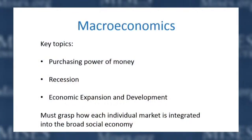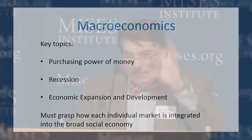I argue that these three issues can only be understood if we understand how each individual market is integrated with each other into the broad social economy. To understand what determines the purchasing power of money, what causes recessions, and what contributes to economic expansion, we need to know how the entire social economy is integrated together — how the different markets come together. Keeping that in mind helps us see the fundamental distinction between Austrian economics and modern macro.